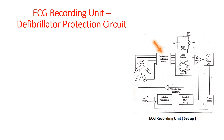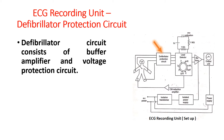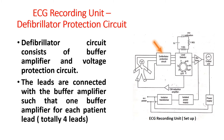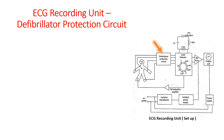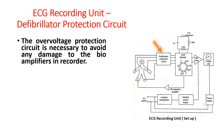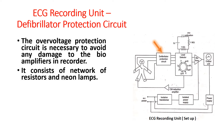Defibrillator protection circuit. It consists of a buffer amplifier and overvoltage protection circuit. The leads are connected with the buffer amplifier such that one buffer amplifier is used for each patient lead, totaling four leads. The overvoltage protection circuit is necessary to avoid any damage to the bioamplifiers in a recorder. It consists of a network of resistors and neon lamps. The lamp fires when a pulse from a defibrillator is present; during firing of the neon lamp, there is no output to the preamplifiers of the recorder.